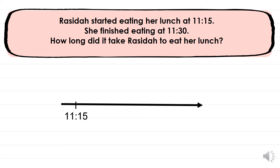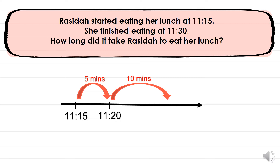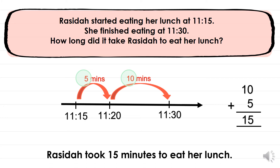So 11:15 will go at the beginning of the number line and we're going to skip by whatever is easiest for us until we get to 11:30. I'm going to jump 5 minutes first, so the new time will be 11:15 plus 5 minutes — 11:20. We have to keep jumping to get to 11:30. If you are thinking 10 minutes next, you are correct. 11:20 plus 10 minutes gives us 11:30. So 5 plus 10 is 15 minutes. It took Rasida 15 minutes to eat her lunch.